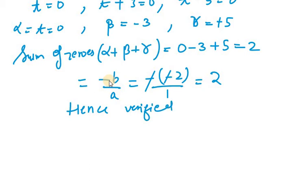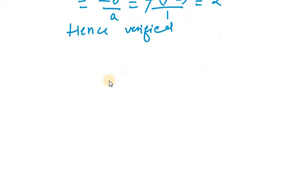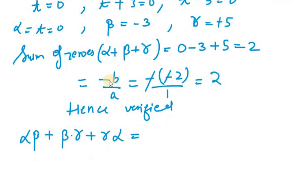Now the second term is product of zeros taken two at a time. So it will be alpha dot beta plus beta dot gamma plus gamma dot alpha. So now we need to find the values for these. So the first term is 0. Why 0? Because alpha is 0. 0 into minus 3 is 0. Now beta dot gamma, minus 3 into 5, so minus 15. Gamma into alpha it will be 0 plus 0. It equals minus 15.